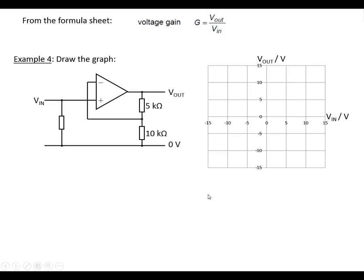Next example here, we've got drawing the graph. So we've got a non-inverting amplifier with RF and RD here. So using the formula 1 plus RF over RD, plug in the numbers, we've got 5k divided by 10k and we add that to the 1, and we end up with a gain of 1.5.